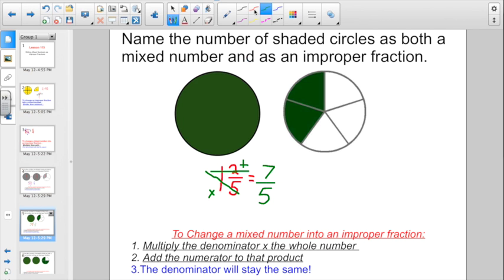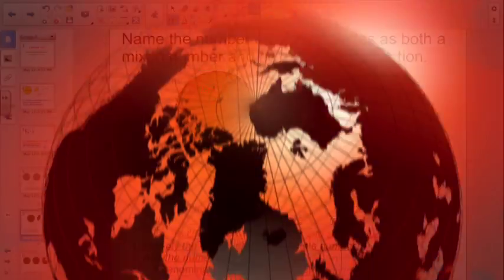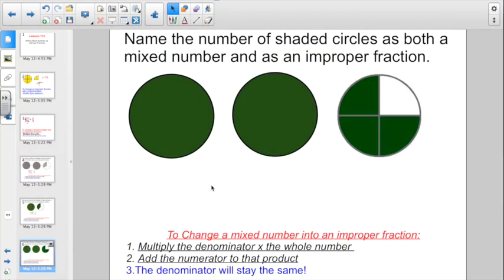And again, if you wanted to think about it logically, if I'm dealing in fifths, this one whole could be considered 5 fifths. Plus another fifth, plus another fifth. That does give us 7 fifths. We'll do this one more time. Go and name it as a mixed number first. I have 2 whole circles and 3 fourths of a circle. So my mixed number, easily enough, 2 and 3 fourths.